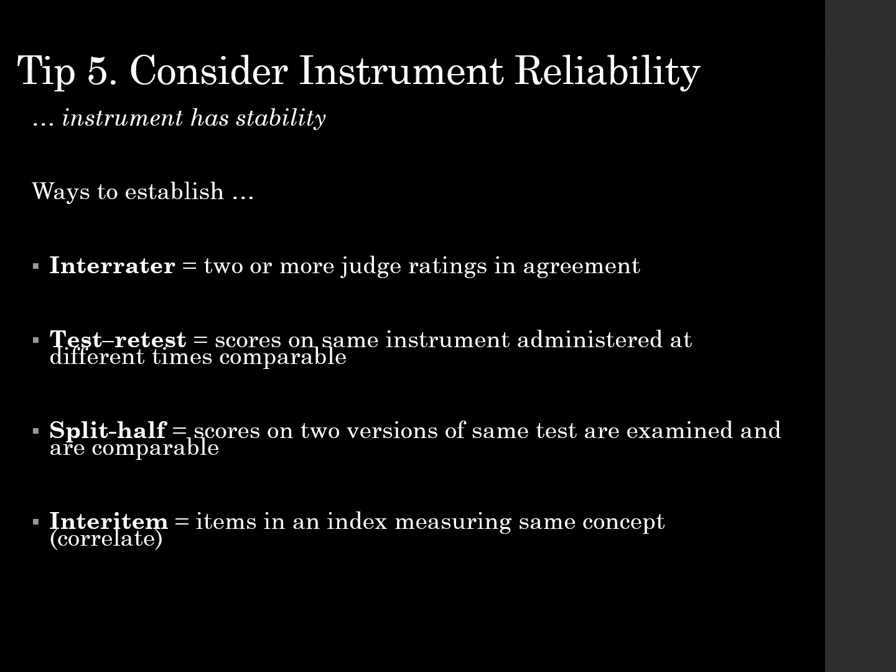The test-retest method means the scores on the same instrument administered at different times are comparable — so we use it at two different times and the results are similar. Split-half reliability means scores on two versions of the same test are examined and are comparable, so we split the test in half and give it to two different people or groups.